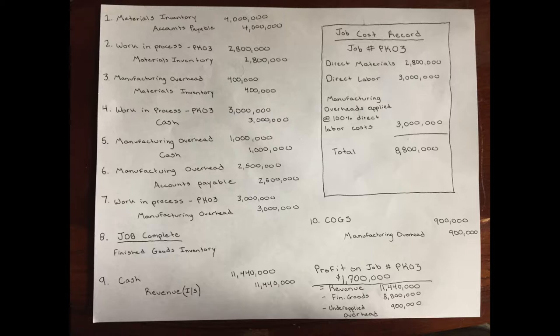For number one, Dynamic Systems Inc. purchases raw materials and places them in the control account. Materials inventory is debited and accounts payable is credited for $4 million. For number two, $2 million worth of raw materials are requisitioned and used in the project as direct materials. Work in process is debited for job number PK03 for $2 million, and materials inventory control account is credited for $2 million.